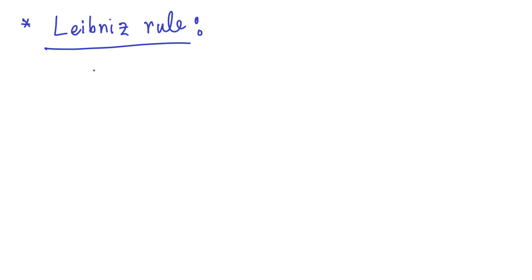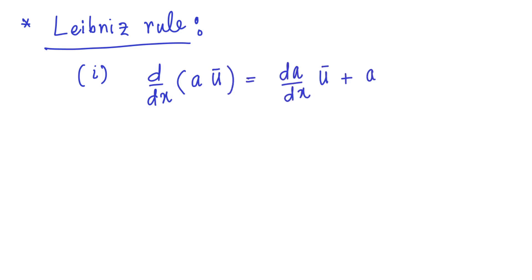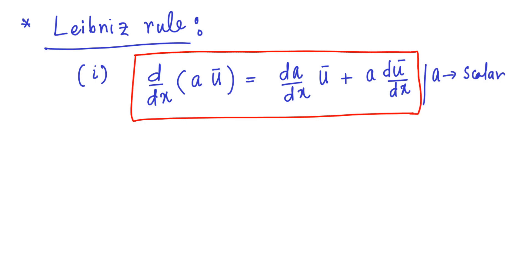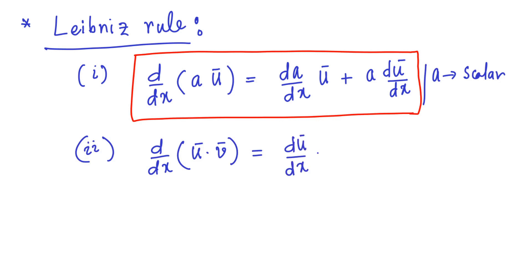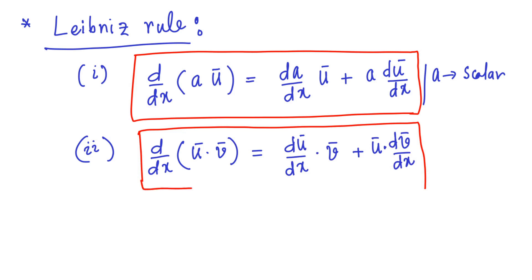In an earlier session, we have seen that the derivative of a product of two functions satisfies the so-called Leibniz rule. Similarly, we can write down the Leibniz rules involving the derivatives of vectors. The derivative of the product of a scalar function and a vector function can be expressed as d/dx of a times u vector equals da/dx times u plus a times du/dx. Similarly, the derivative of the dot product of two vectors u and v can be expressed as du/dx dot v plus u dot dv/dx.